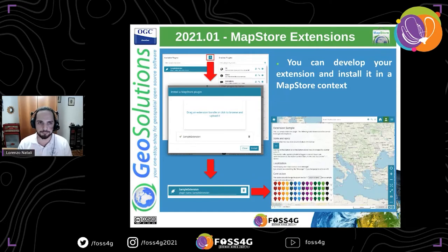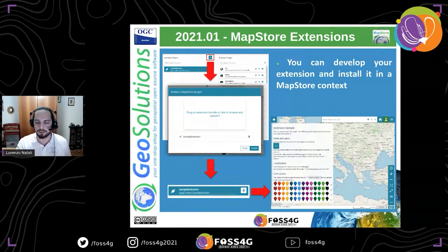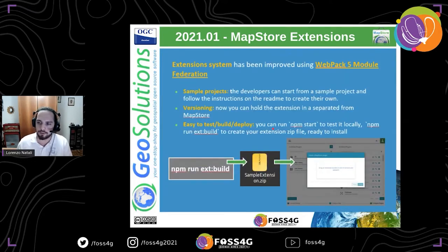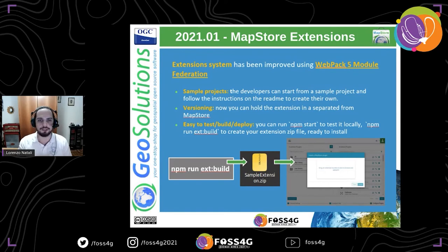We also introduced in this release the extension system. Extensions are plugins that can be installed on the fly in a running instance of MapStore. You don't have to create a custom project — you can use the standard product or a custom project and install extensions as well. In the wizard for creating application contexts, there is a user interface to drag and drop extensions developed by you or a third party, and install them into the environment to use in specific application contexts. This means you can customize your installation and add plugins without needing to rebuild a full custom project.